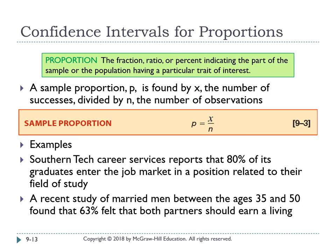Now we discuss the confidence interval for population proportion. Proportion is the fraction, ratio, or percentage indicating the part of a sample or population having a particular trait. The formula for proportion is p = x over n, where x is the number of observations with the trait. Questions about proportion typically involve percentages like 80% or 63%.